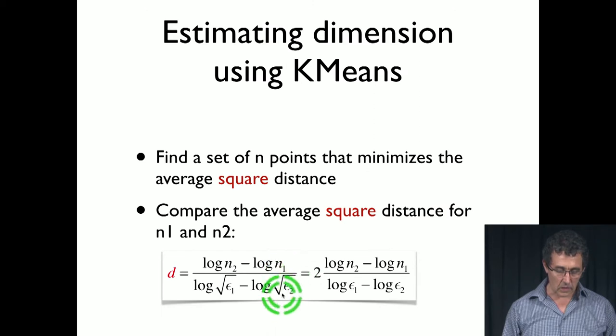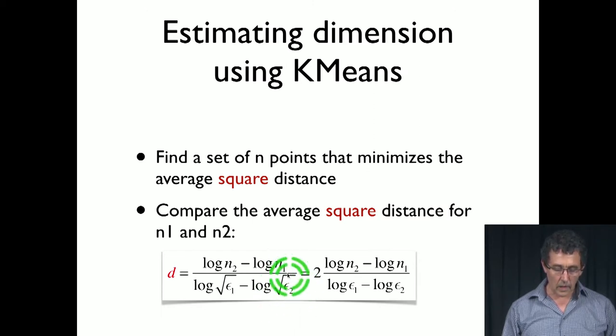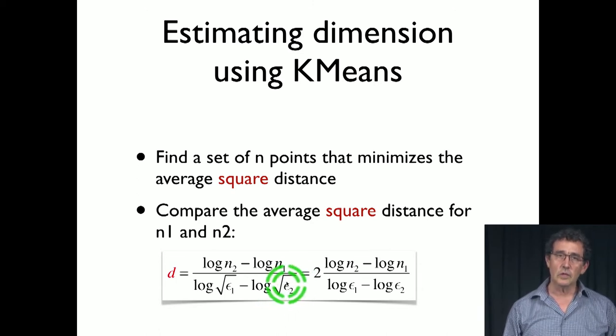If we want to use epsilon that is the square distance, then we have to take the square root here and we will get a factor of 2 up in front here.